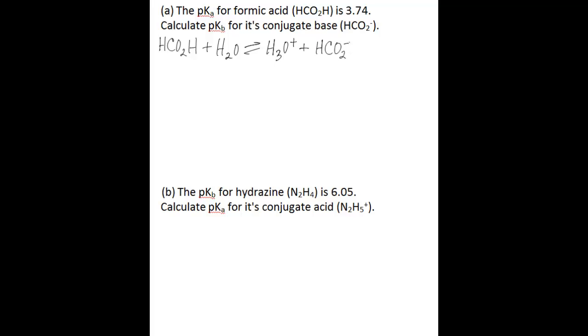The Ka expression for this equation is the concentration of hydronium ion multiplied by the concentration of HCO2- divided by the concentration of formic acid. And you'd find the pKa using this Ka with the simple equation: pKa equals the negative log of the Ka value.